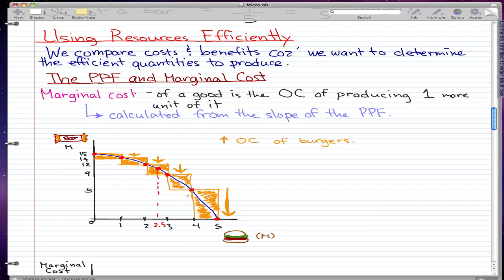And all the way to 4 to 5, from 4 million to 5 million, it costs us 5 million bars. So that's increasing opportunity cost of burgers, because it's costing us more and more bars as we increase our production of burgers.